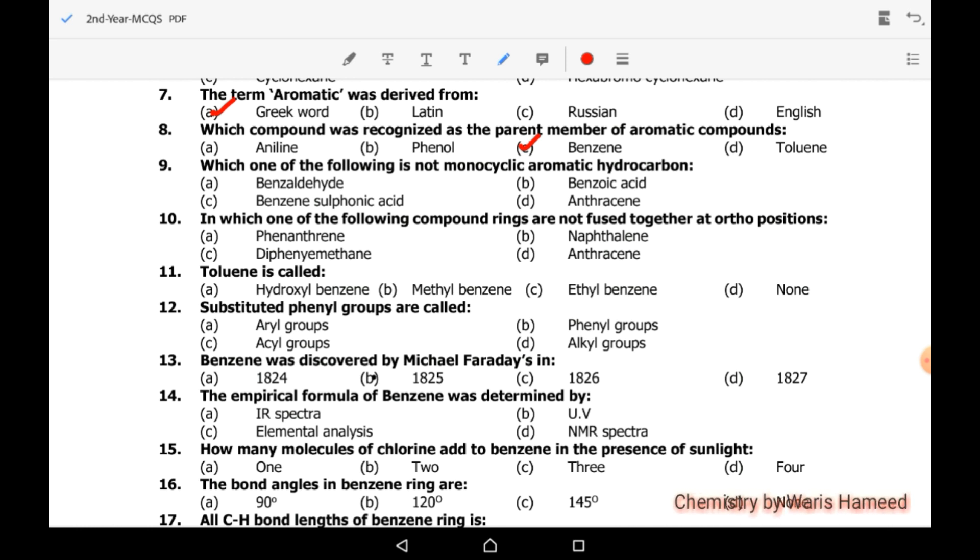Which one of the following is not monocyclic aromatic hydrocarbons? Benzaldehyde has one aldehyde group, benzoic acid has carboxylic group, benzene sulfonic acid has sulfo acid group. Anthracene is a polycyclic benzene ring. Its structure has three adjacent benzene rings.